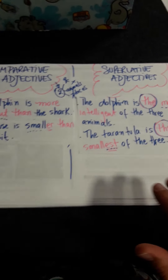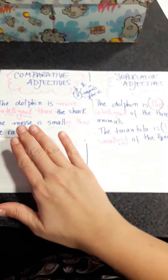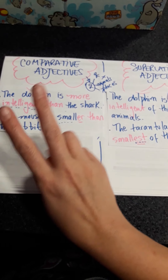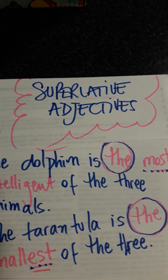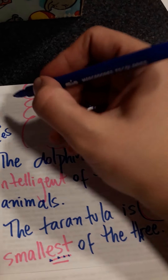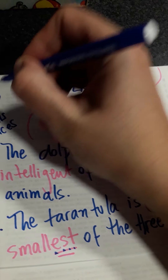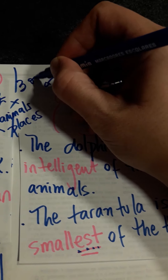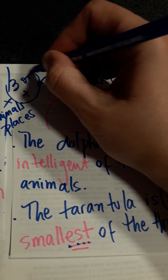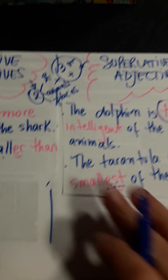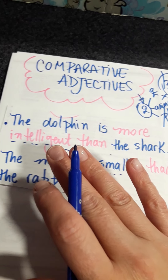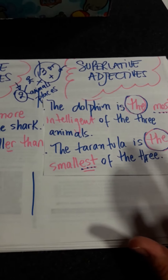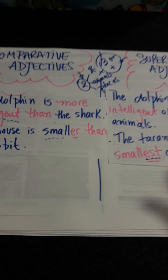So, these are different. We use comparative adjectives to talk about two only — two people, two animals, two places. And with superlative adjectives, it's when we have three or more than three. Now, this rule is for short and long adjectives, but we have exceptions.